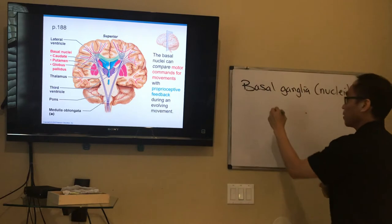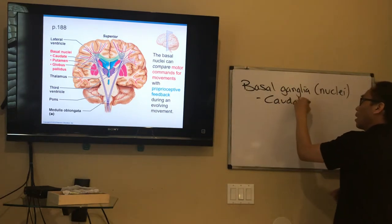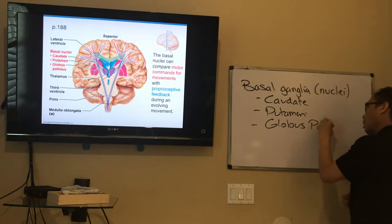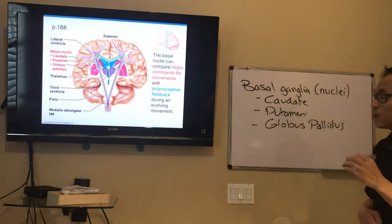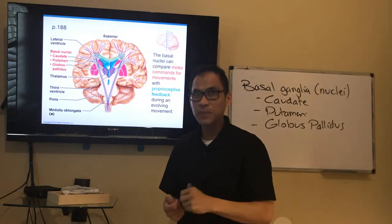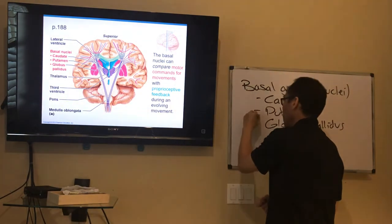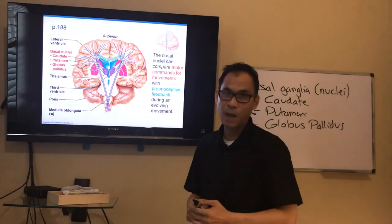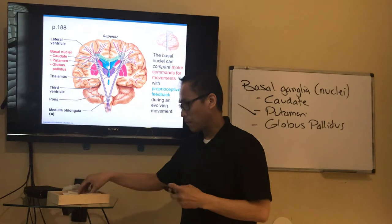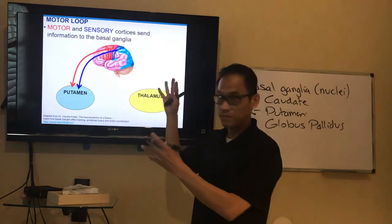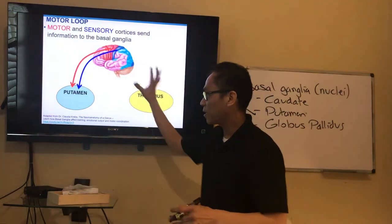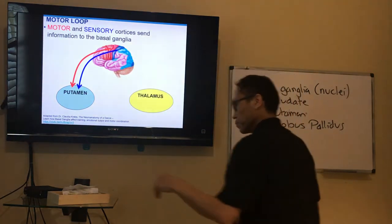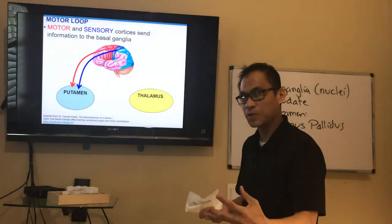If you cut the brain open in a frontal plane view, you can see those lateral ventricles and the third ventricle. The basal ganglia — also called basal nuclei — consist of three structures: caudate, putamen, and globus pallidus. Both terms simply mean a cluster of cell bodies. These are very important for executing movement. We're going to focus on the putamen and one loop called the motor loop.